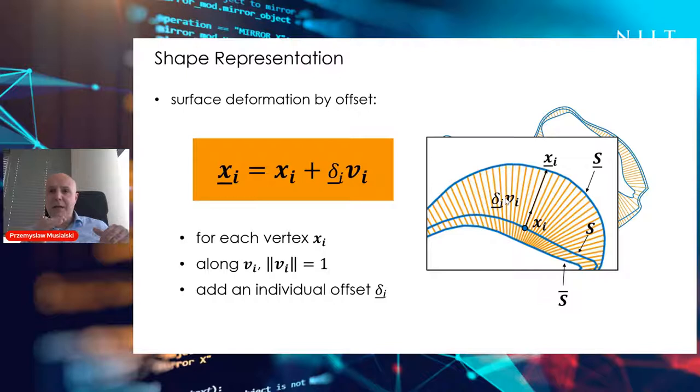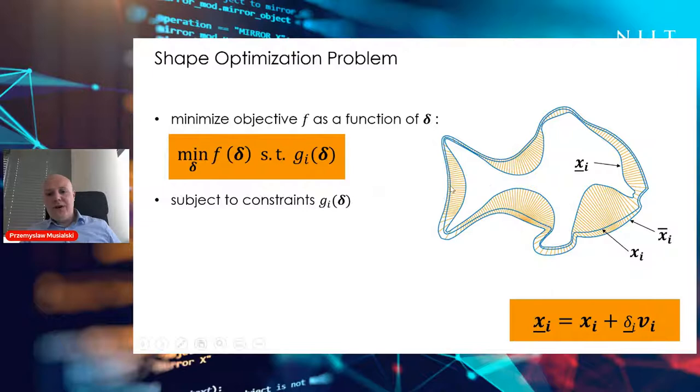The problem now is to find those offsets, all those delta values. Let's assume we have this initial surface and those vectors perpendicular to the surface. We want to compute all those offsets such that when the fish is 3D printed, its center of mass and the way how it floats is properly distributed. This can be formulated as an optimization problem.